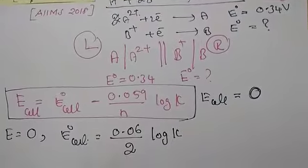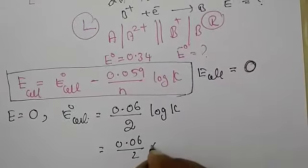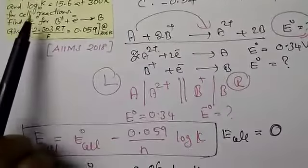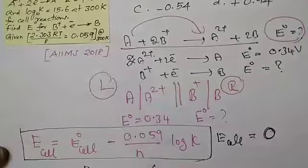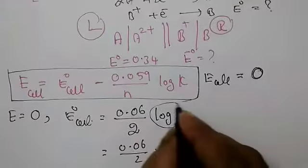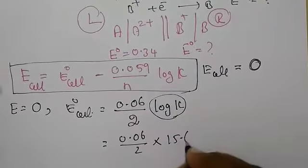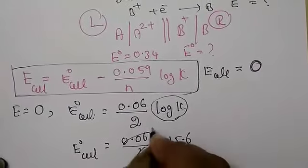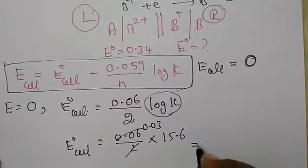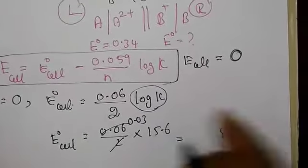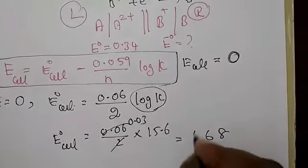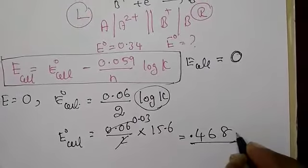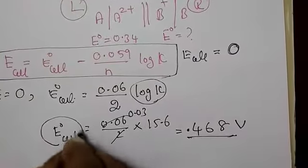Next step: the log K value is given in the data as 15.6. So now substituting: E°_cell = (0.059 / 2) × 15.6. On cancelling and multiplying — 0.059/2 = 0.0295, and 0.0295 × 15.6 — you are getting 0.468 V as the E°_cell.